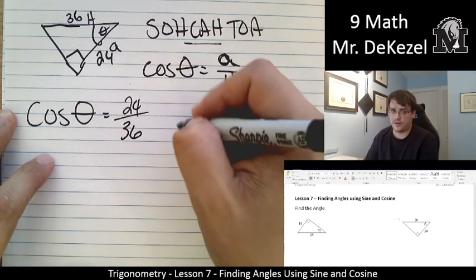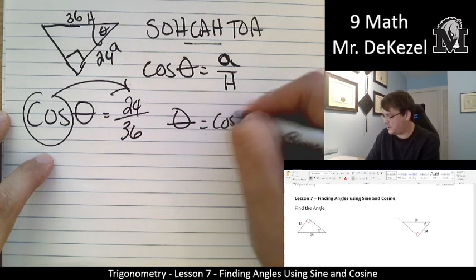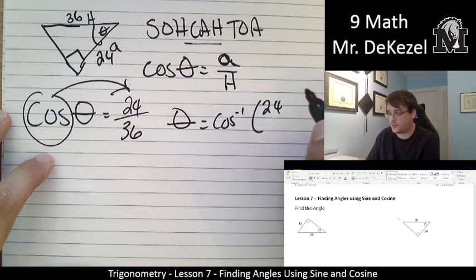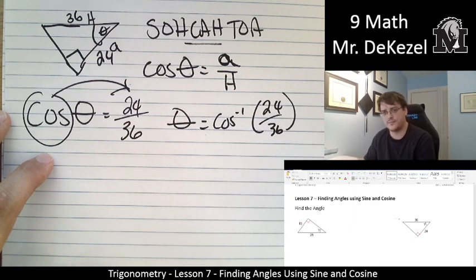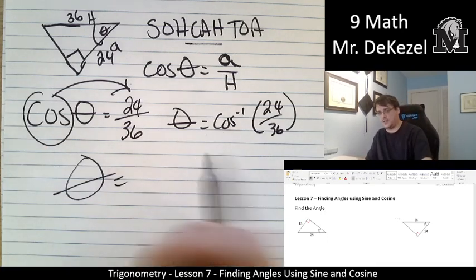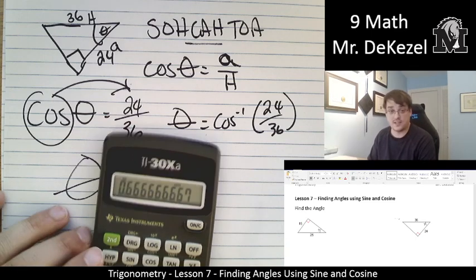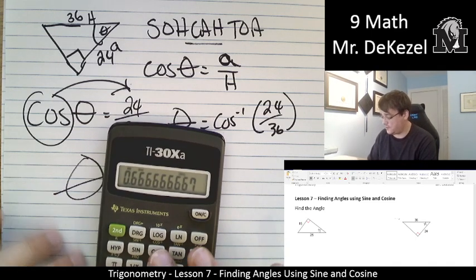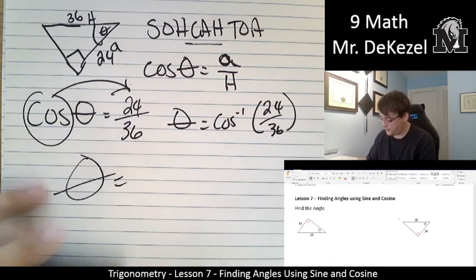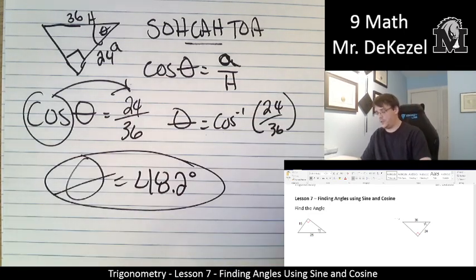Let's go ahead and move the cosine over. So, theta is equal to, let's see, 24 divided by 36. It's 0.66666. And then we second function, and then we do a cosine this time. That's 48.2. 48.2 degrees.